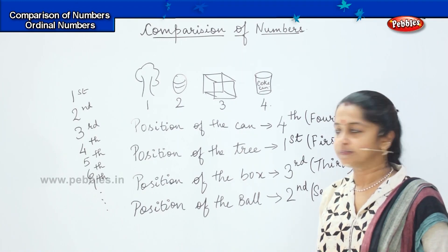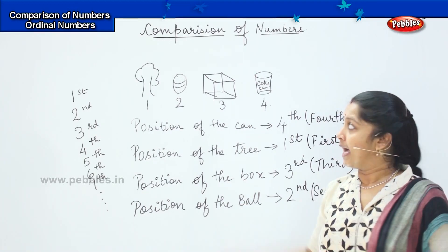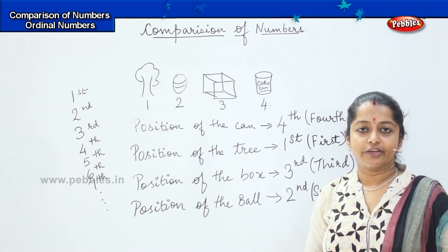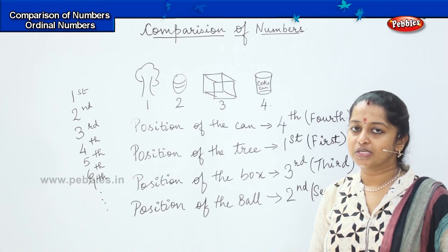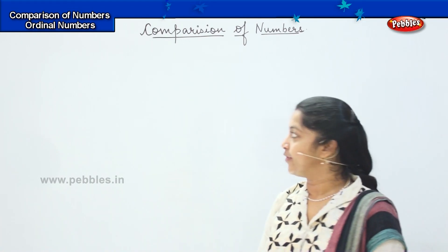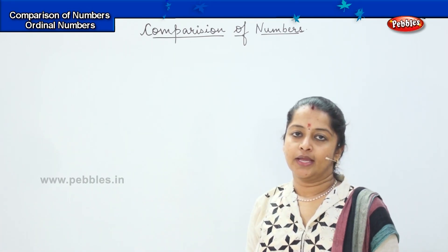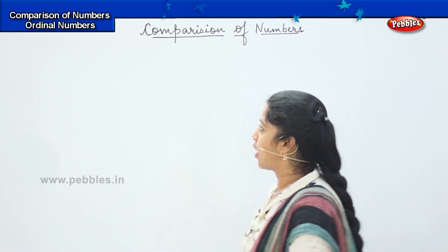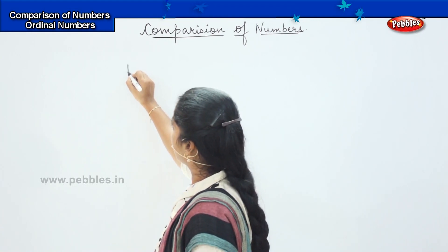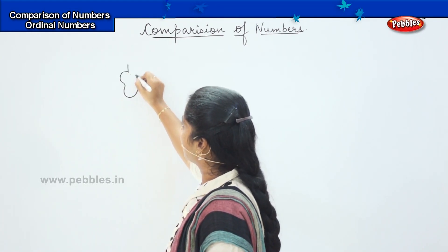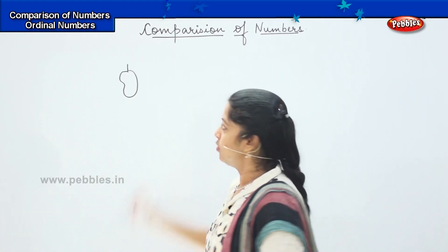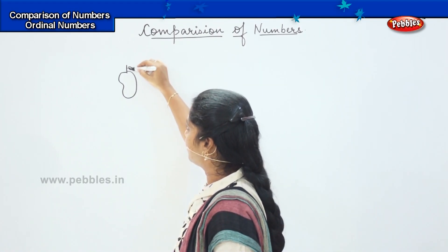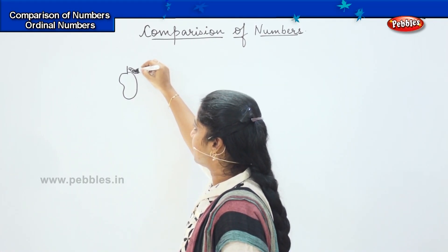Shall we do some sums? I am going to give you a few fruits and you need to tell me the position of each fruit by looking at the picture. The first one I draw is a mango — I suppose everyone loves mango, it is the favourite fruit during summer season. Then I have an apple — an apple a day keeps the doctor away.